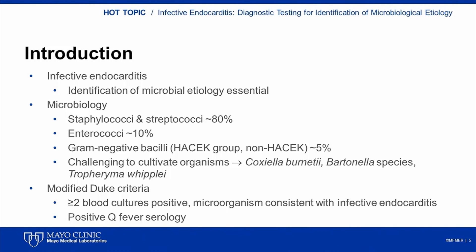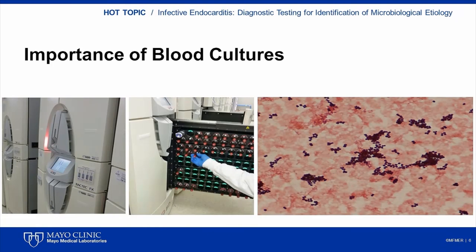The modified Duke criteria provide a basic framework for diagnosis and definition of endocarditis. The finding of two or more blood cultures positive for a typical organism consistent with infective endocarditis is a major criterion for diagnosis, as is positive Q-fever serology. Echocardiographic findings are also considered by the Duke criteria, although they are beyond the scope of this Hot Topic. Endocarditis is an endovascular infection associated with the persistent presence of infecting microorganisms in blood. Accordingly, blood cultures are the standard test to determine the microbial etiology.